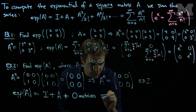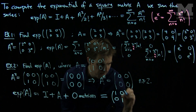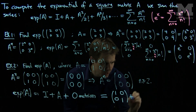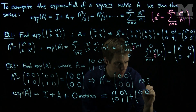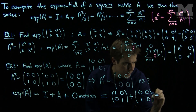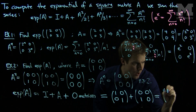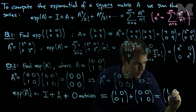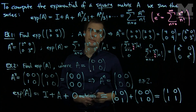So let's compute the exponential of this matrix. The exponential of A will therefore be equal to the identity matrix plus the matrix A, and then every other term in this expansion is 0. So all I need to do is take the identity matrix [1, 0, 0, 1] and add it to the original matrix A which is [0, 0, 1, 0]. This gives me [1, 0, 1, 1]. Thank you very much.